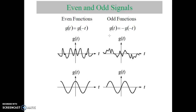And if you consider g of t equal to minus g of minus t, then the given function is said to be an odd function. Or if x of t is equal to minus x of minus t, then the given signal is called an odd signal, or it may be called an anti-symmetric signal. Even signals are called symmetric signals.